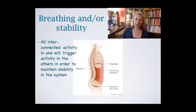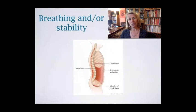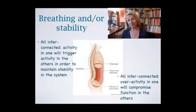Activity in one muscle will trigger activity in the others—we know that because otherwise we'd be bending and twisting all over the place. Keeping that in mind, we can also know that over-activity in one group will cause a compromise in function in the others.